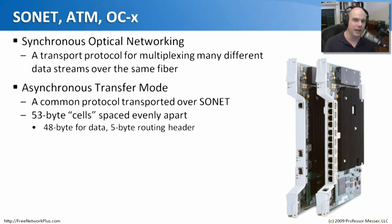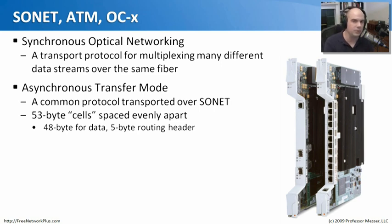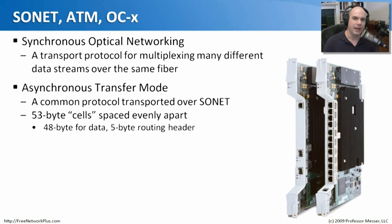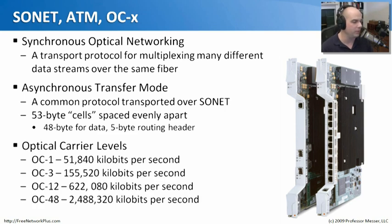ATM was interesting because it was unlike any other networking topology we'd seen. It uses things called cells — every packet that went through an ATM network was 53 bytes long, with separate spaces between them, always streaming through the network. Whether there was data inside those cells or not, there was this constant, evenly-spaced stream of ATM traffic. Providers loved this because they could time everything perfectly, always expecting 53 bytes in a standard gap, regardless of whether traffic was present.